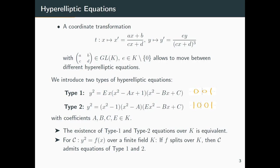It's important to note that over k, not every hyperelliptic curve has an equation of this form — it might be necessary to go to a field extension. But there exists an easy sufficient criterion: if all the Weierstrass points are k-rational. So if we have y² = f(x) and the polynomial f has all its roots in k, then we can always find an equation of Type 1 and Type 2.